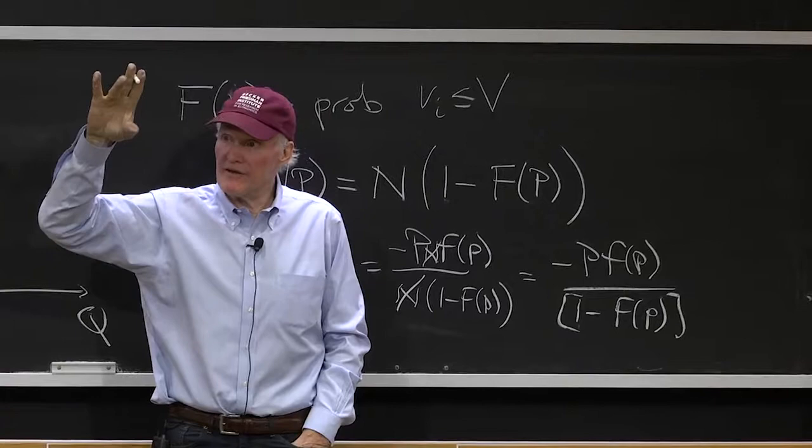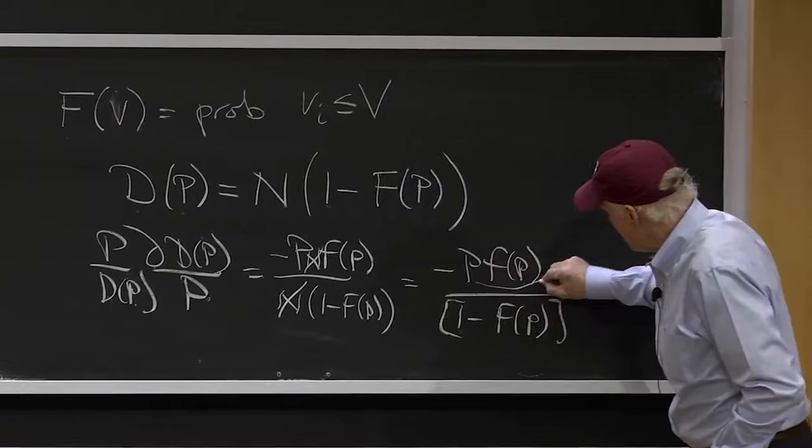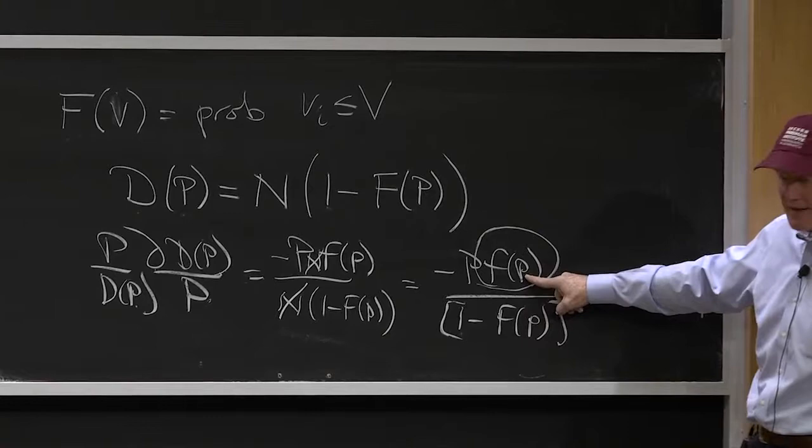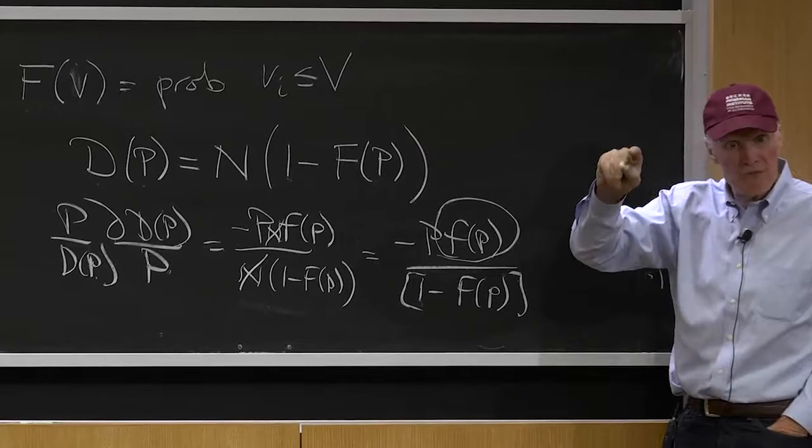It compares the fraction of people, the number of people on the margin at that price, that's the height of the density, and that's how many people are buying already. So it's how many people you have on the margin relative to how many people are already buying.